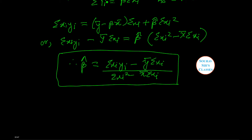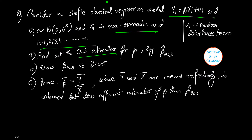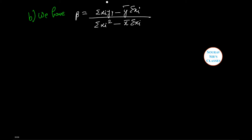Now let us check out the second part. We need to show that beta OLS is BLUE — Best Linear Unbiased Estimator. Let us do this process. We have beta equals to the following.